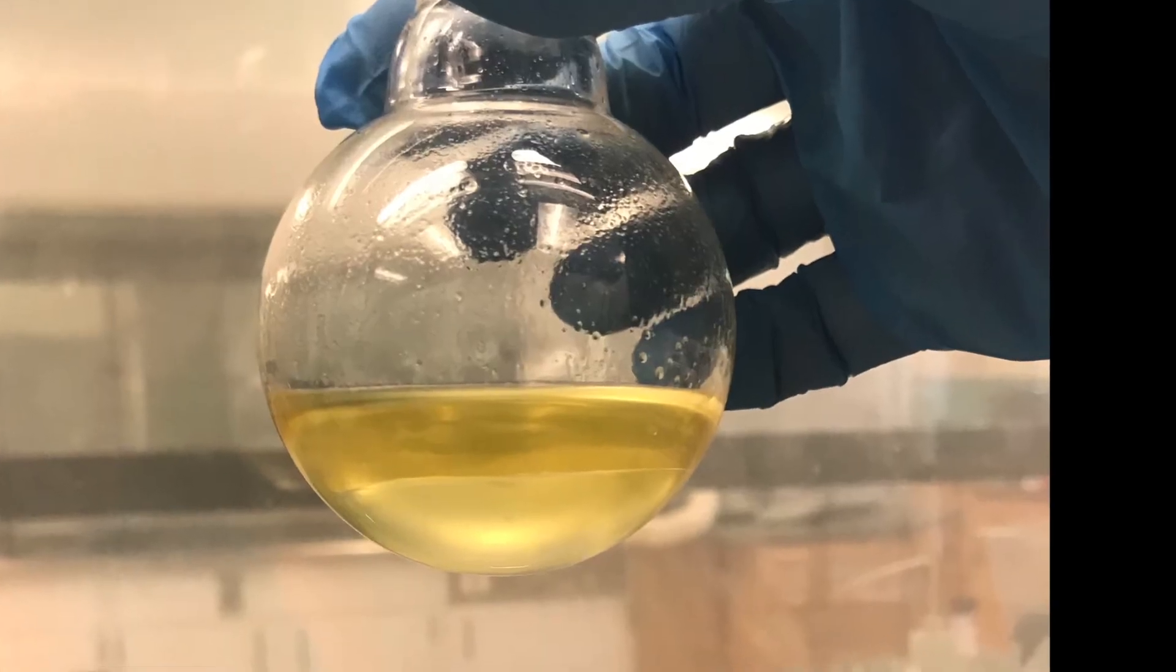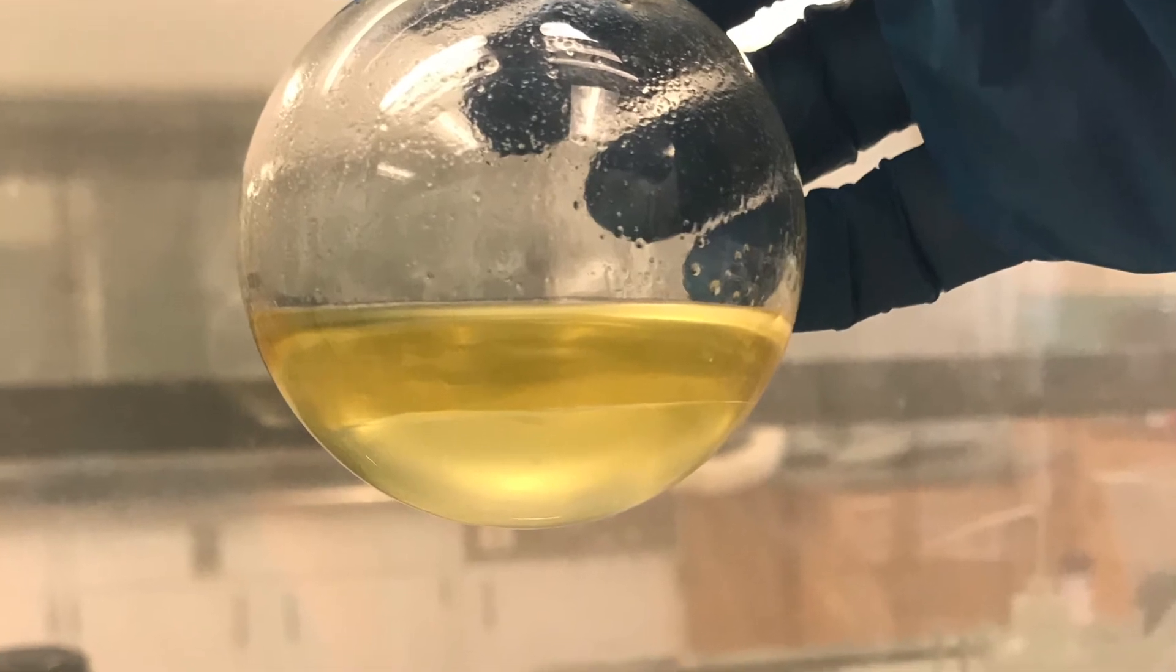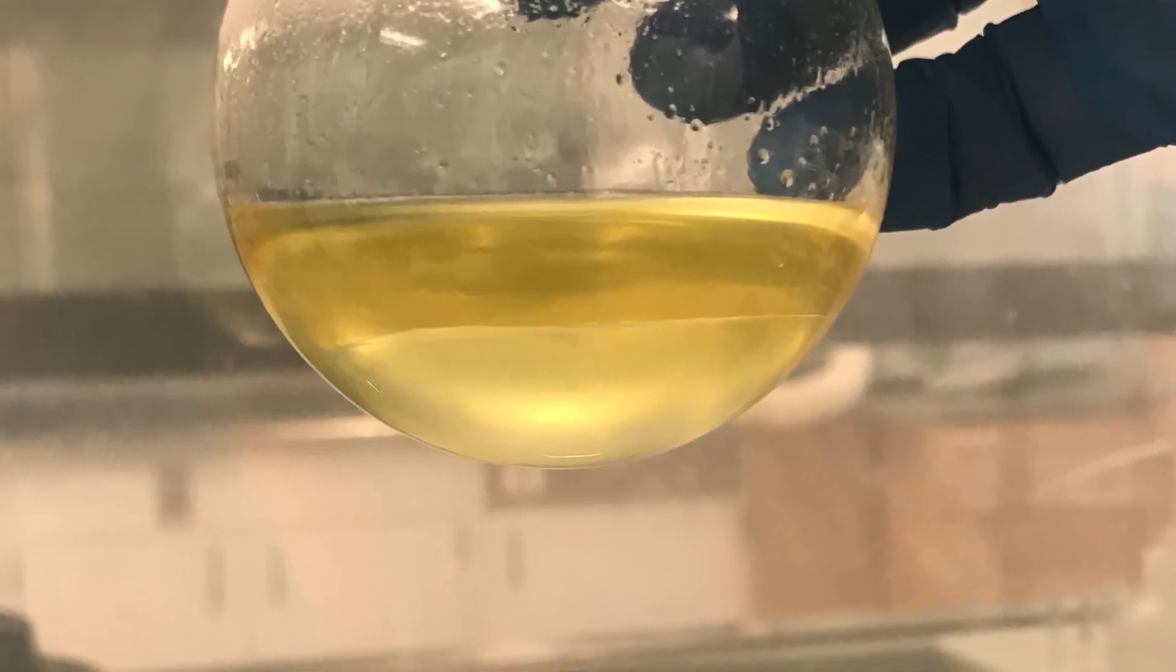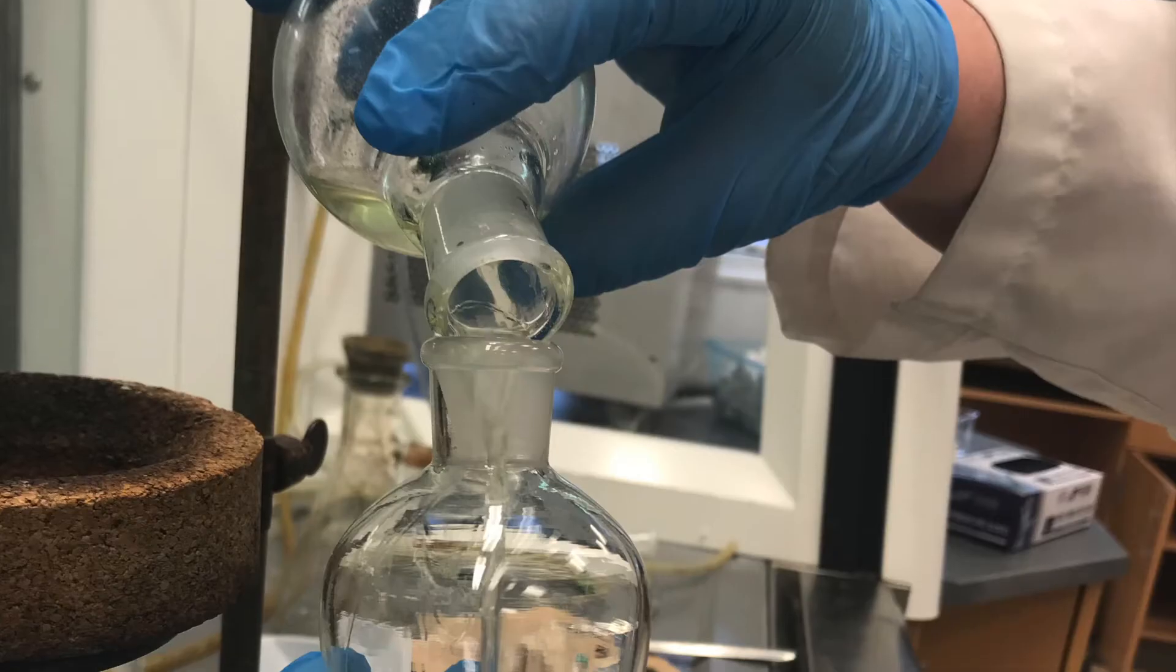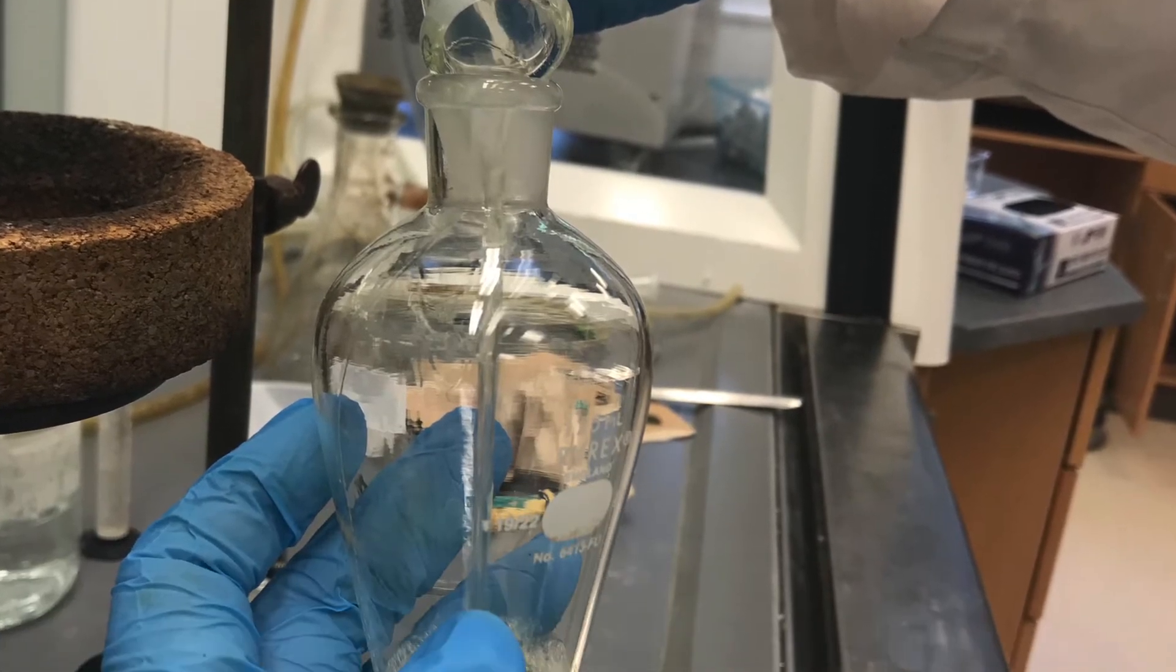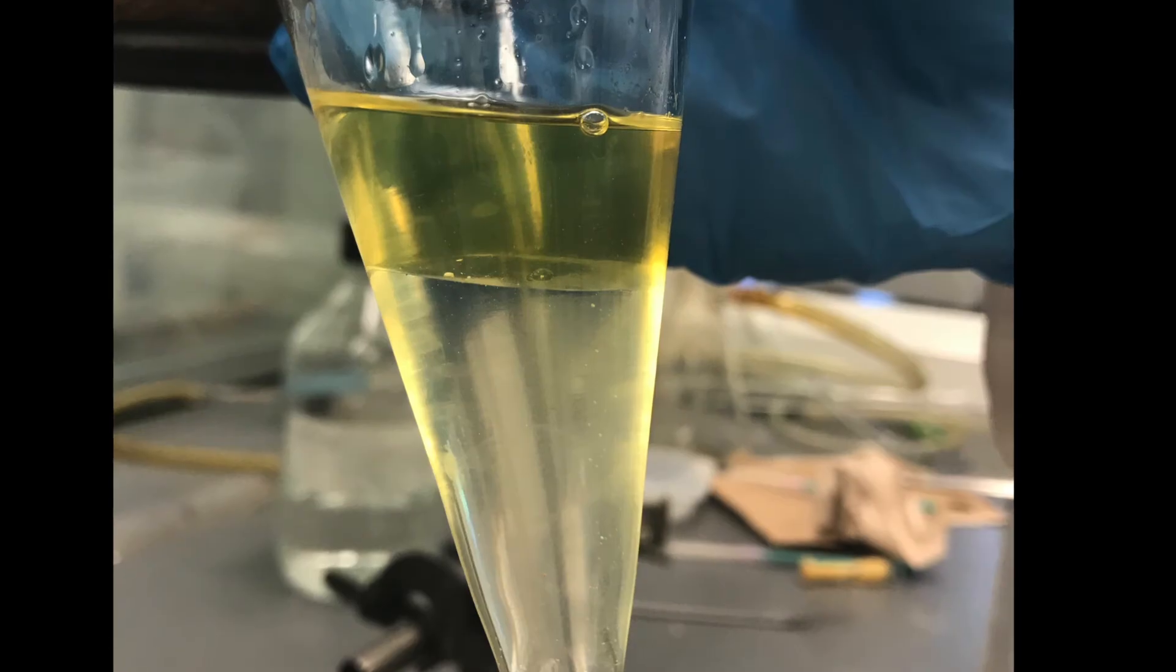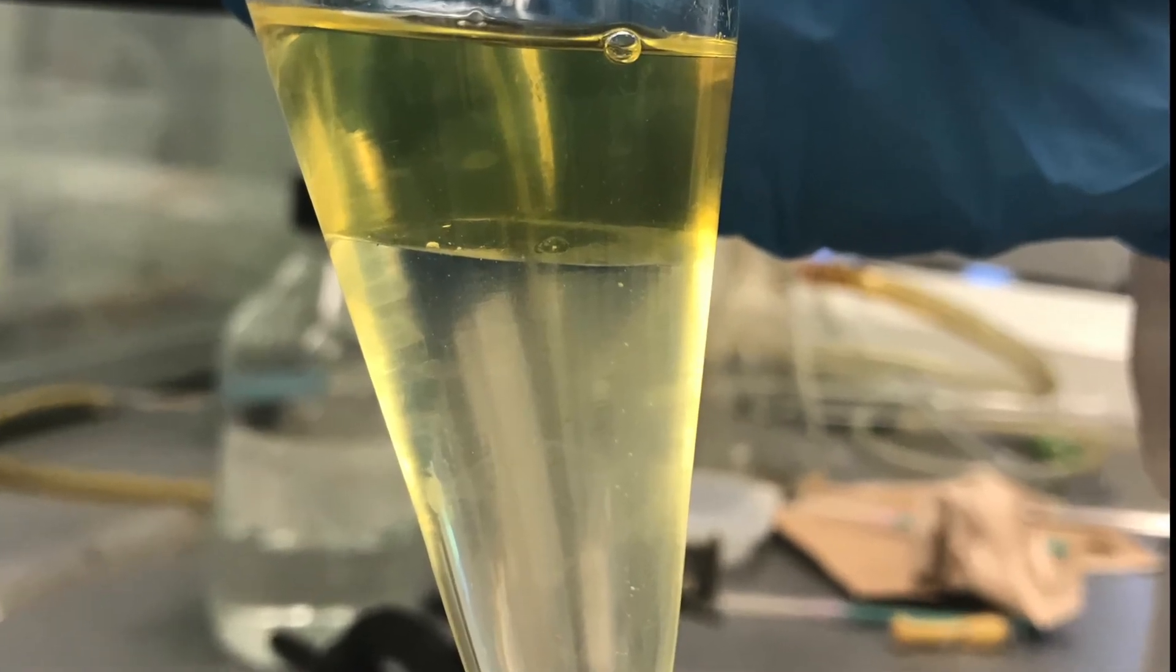I added about 8 milliliters of ether. I am able to see two distinct layers without any residual solid, so I am ready to go for my extraction. As soon as I add the ether, my product, the triphenyl methanol, will go into the ether layer, leaving all the inorganic side products in the aqueous layer.